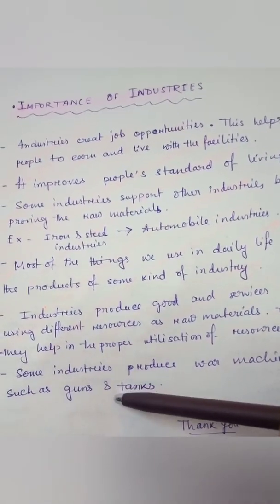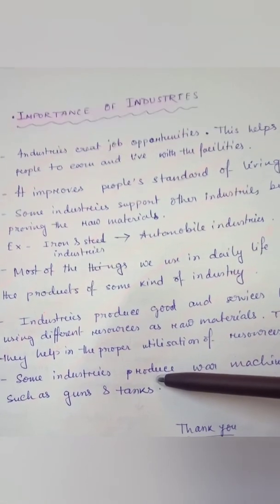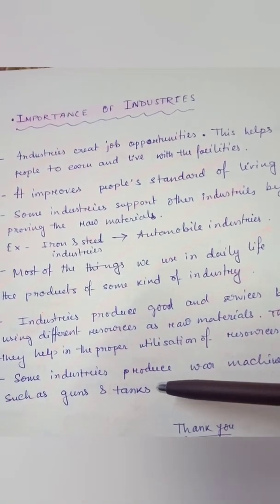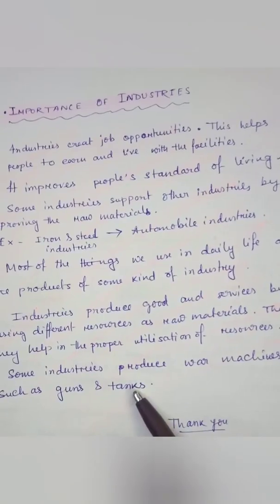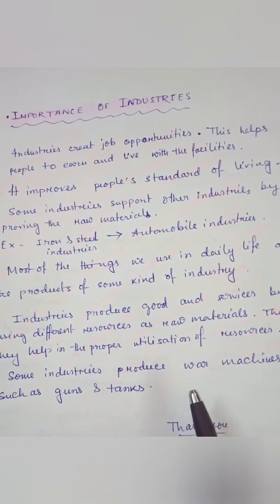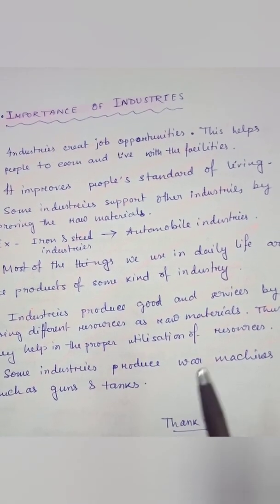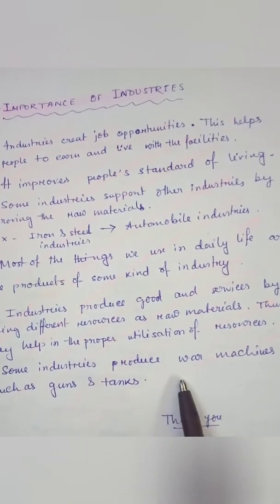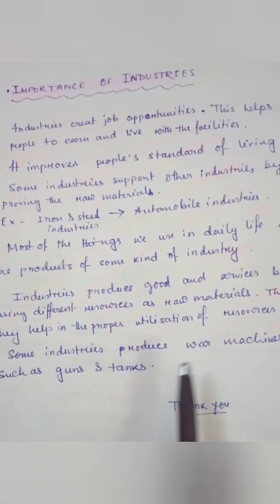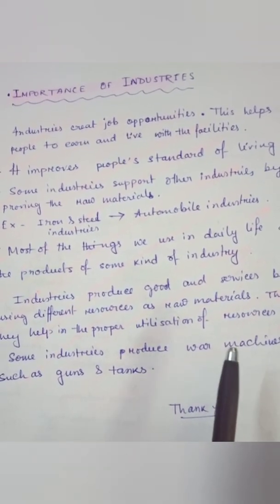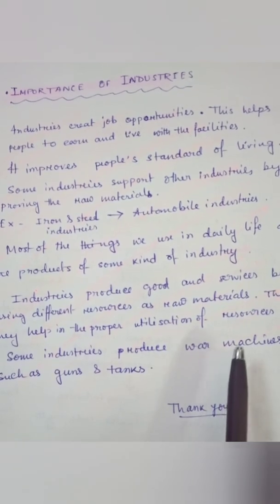Sixth, some industries produce war machinery. Every country has a defense sector — the army and military — which uses various advanced weapons and machines. These weapons are manufactured to protect the country from foreign invaders and enemies. So, students, I hope you have understood the concepts discussed today. In the next video we will discuss more important points — the types of industries. Till then, stay safe, stay healthy, and don't forget to watch the video. Thank you.